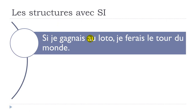Si je gagnais au loto, je ferais le tour du monde. SI JE GAGNAIS — GAGNER is to win — AU LOTO. JE FERAIS is the CONDITIONNEL form of FAIRE — I would do. LE TOUR DU MONDE — I would travel around the world. The idea is that it's a desire, something you would like to do, but you're not sure it will happen. Si je gagnais au loto, je ferais le tour du monde.